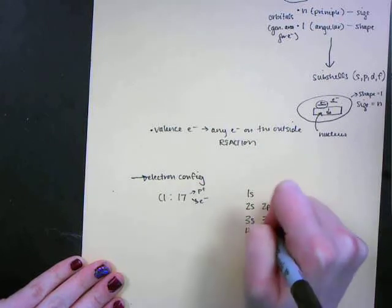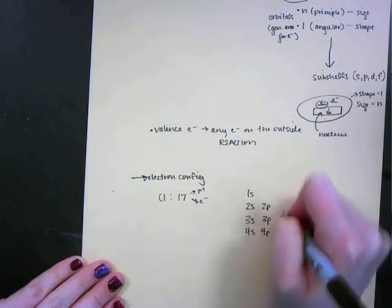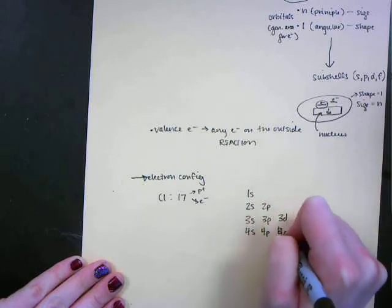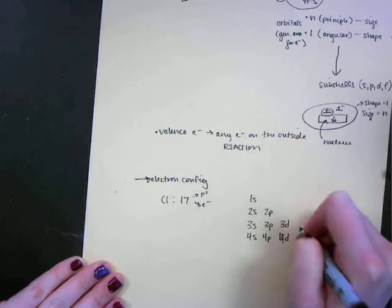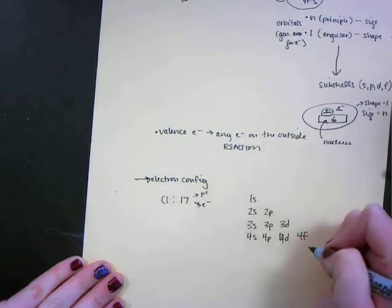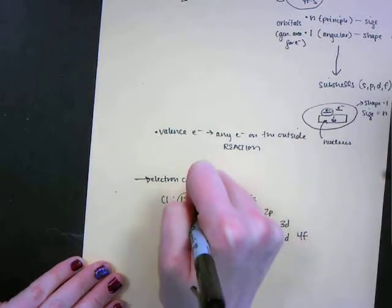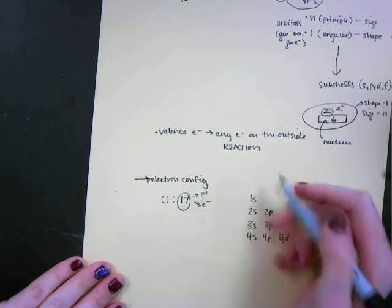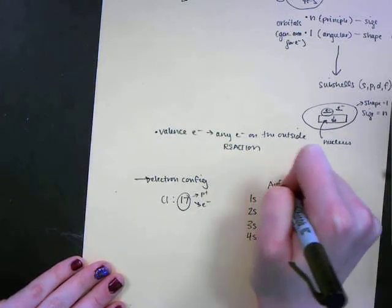I need to place these 17 electrons into the proper shells and we use the diagonal rule because we want to keep track of Aufbau's principle.